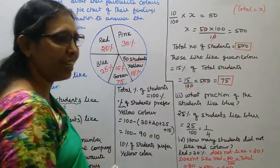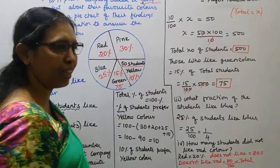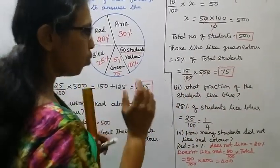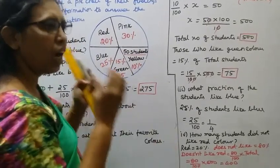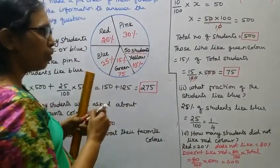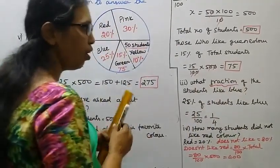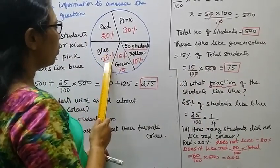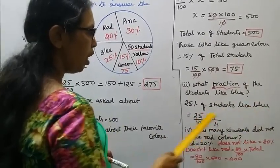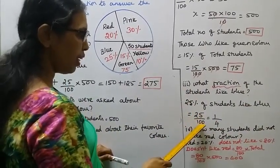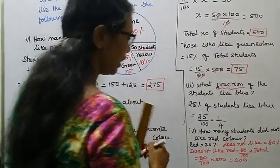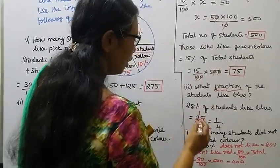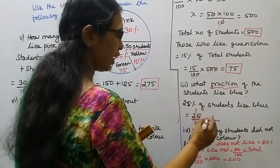Next question: What fraction of the students like blue color? 25% of students like blue. The fraction is 25 by 100, which simplifies to 1 by 4. So the fraction of students who like blue is 1/4.